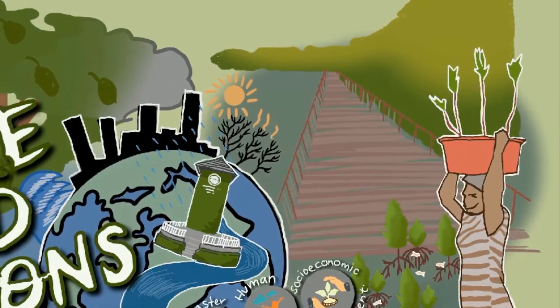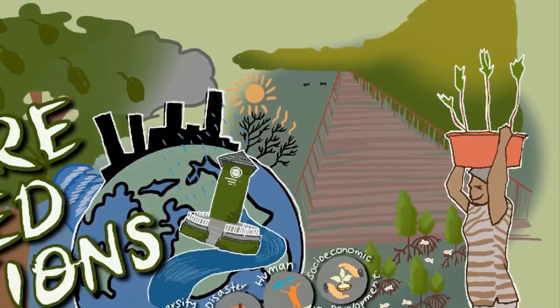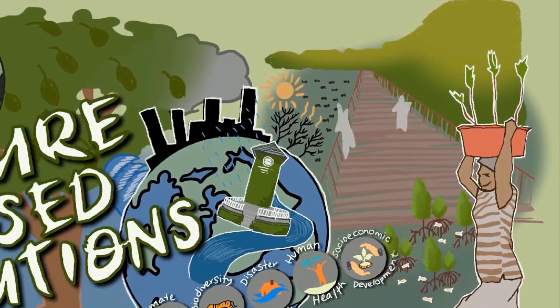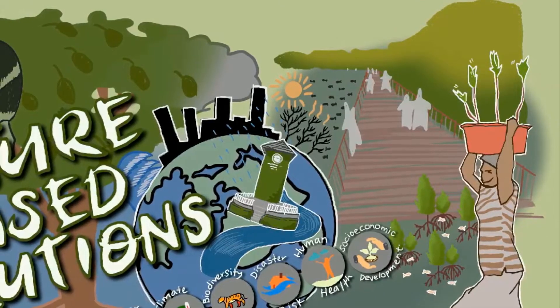These include replanting mangroves, organizing ecotourism activities and generating and selling sustainable products made from wetland resources such as gelam trees or melaleuca and mengkuang plants or wild sedge.